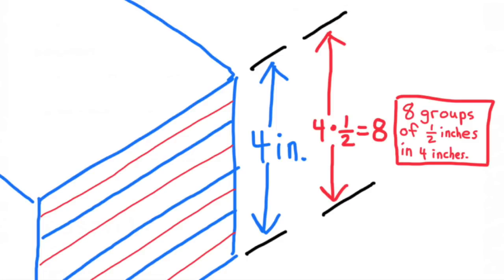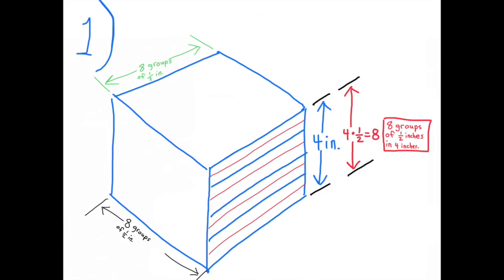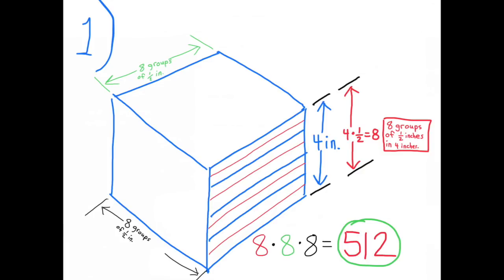This drawing represents an edge length of 4 inches. It has markings every half inch. There are a total of 8 half-inch sections that fit into the 4-inch edge line. This drawing represents the height, width, and length of the cube — each 4 inches in length, with 8 sections of half inches fitting inside each 4-inch edge. 8 × 8 × 8 equals 512.